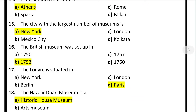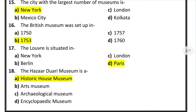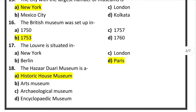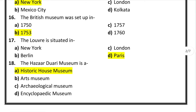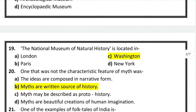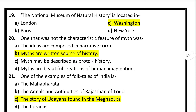Question number 15: the city with the largest number of museums is New York. Question number 16: the British Museum was set up in 1753. Question number 17: the Louvre is situated in Paris. Question number 18: the Hazarduari Museum is a historic house museum. Question number 19: the National Museum of Natural History is located in Washington.